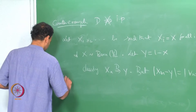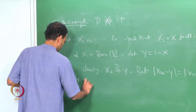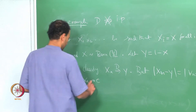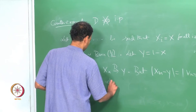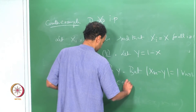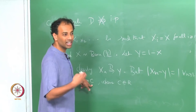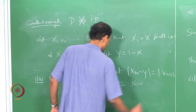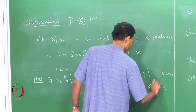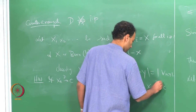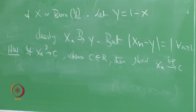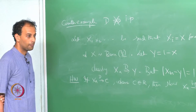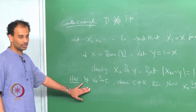This is a homework problem: if X_n converges to C in distribution, where C is a constant in ℝ, show that X_n converges to C in probability. Prove it — it is not all that difficult.